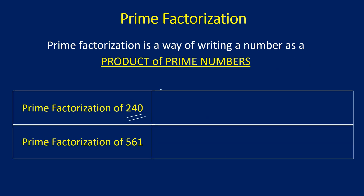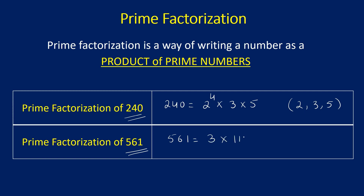Next, what is the prime factorization of 240? 240 can be represented as 2 raised to 4 into 3 into 5, and therefore 240 is made up of three prime numbers: 2, 3, and 5. What is the prime factorization of 561? 561 can be represented with prime factors that is 3 into 11 into 7, so 561 is represented with three prime factors: 3, 11, and 7. As you have seen, any number can be represented as a product of prime numbers, and the process of factorizing a number into its prime numbers is known as prime factorization.